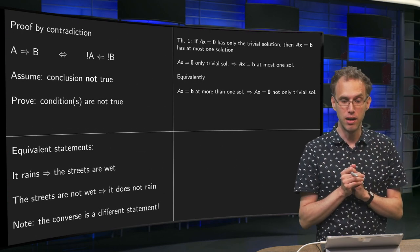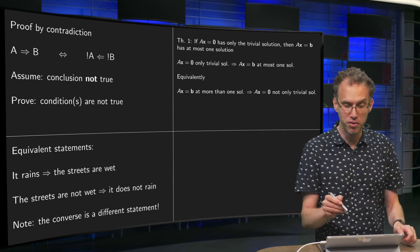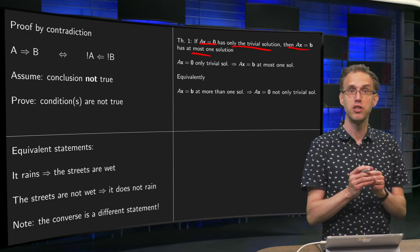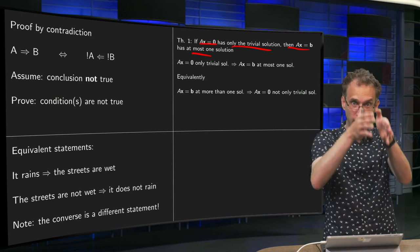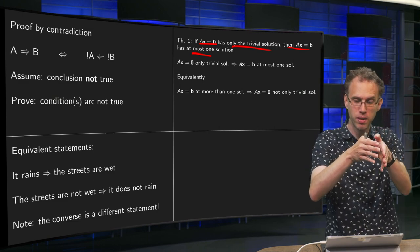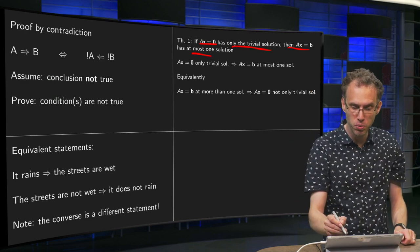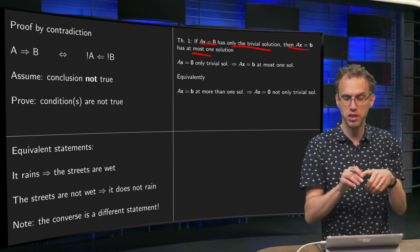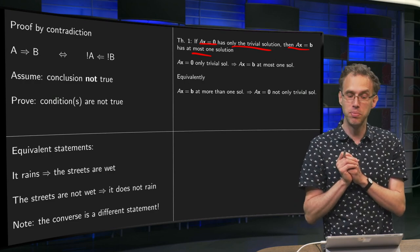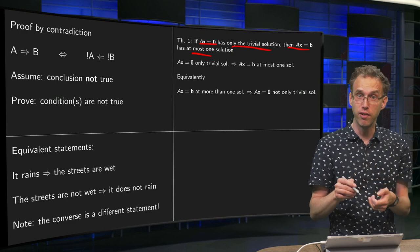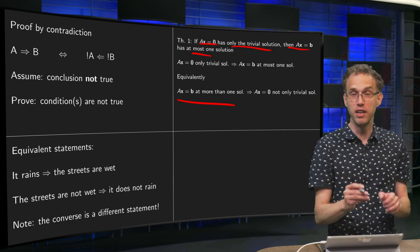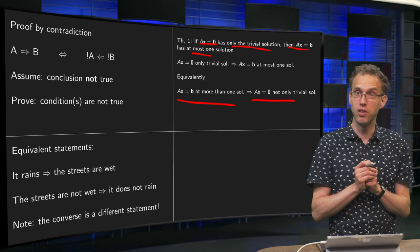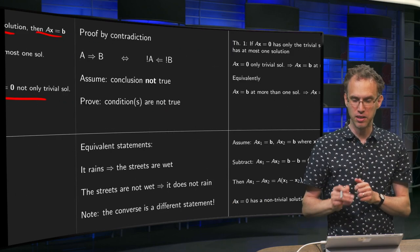What is an example of a proof by contradiction? We have a theorem: if Ax=0 has only the trivial solution, then Ax=b has at most one solution. So condition A is that Ax=0 has only the trivial solution, and conclusion B is that Ax=b has at most one solution. Equivalently, the negation of B — Ax=b has more than one solution — implies the negation of the condition: Ax=0 has not only the trivial solution. And the second one is easier to prove, and that is what we are going to do.